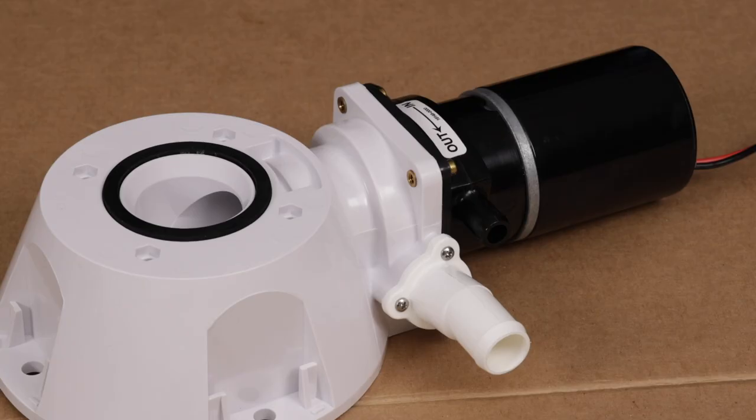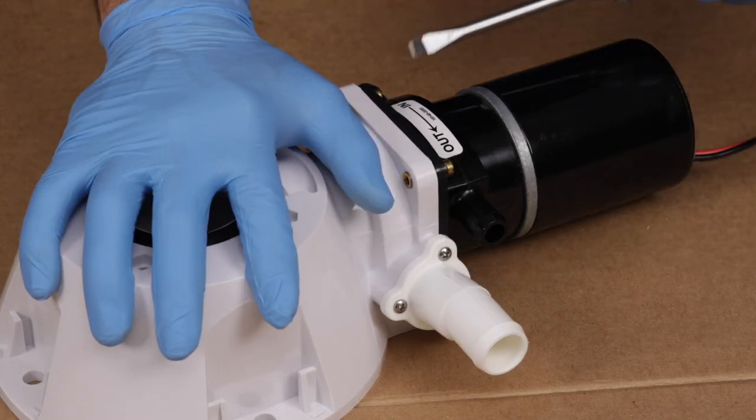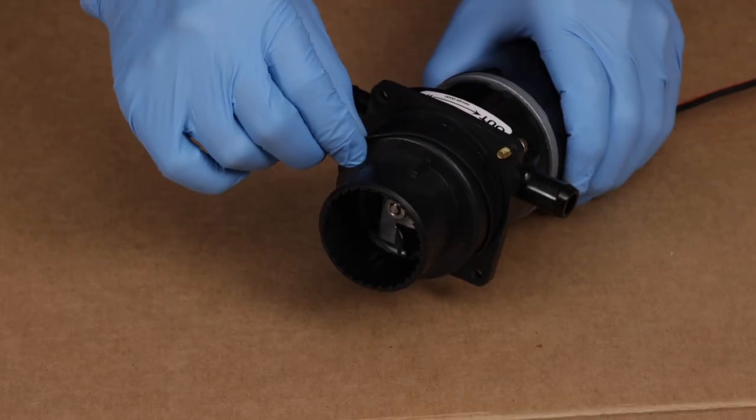Start by removing all connected hoses. Then remove the four screws and lock washers that secure the pump assembly to the base. Then remove the thin wear plate o-ring.